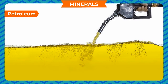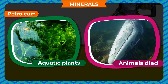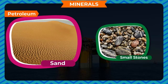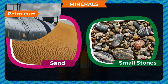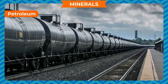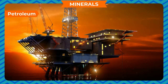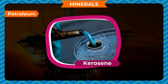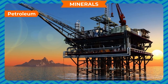Petroleum is another fossil fuel. Like coal, it is formed from aquatic plants and animals that died and settled on the ocean floor. With the passage of time, other sediments such as sand and small stones covered them, and excessive heat and pressure turned them into petroleum. It is also called black gold. It is mainly used as fuel in various forms such as petrol, diesel, and kerosene. Almost half of the energy used by the world comes from petroleum.